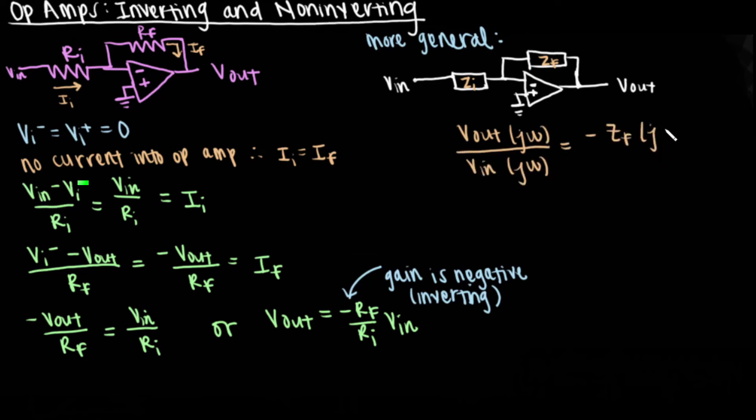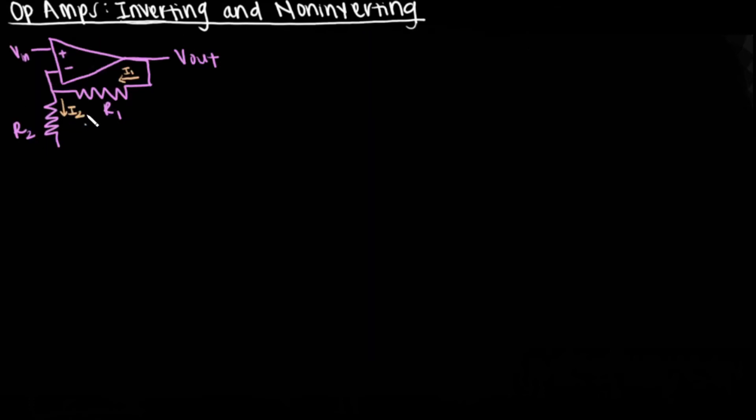Non-inverting amplifiers have a positive gain because the input voltage is connected to the non-inverting input. In this example, VN is directly connected to the non-inverting amplifier, so it is equal to VI negative, which is equal to VI plus. We also know that there is no current into the op amp.